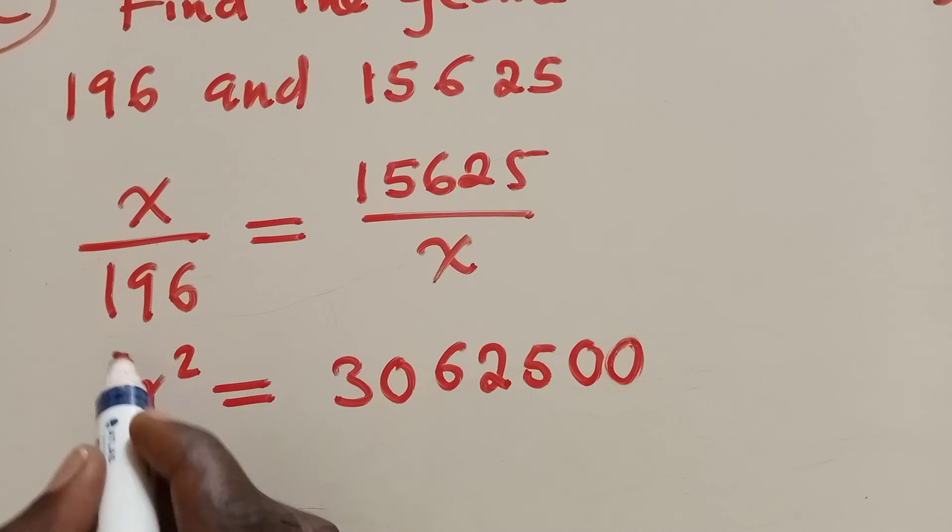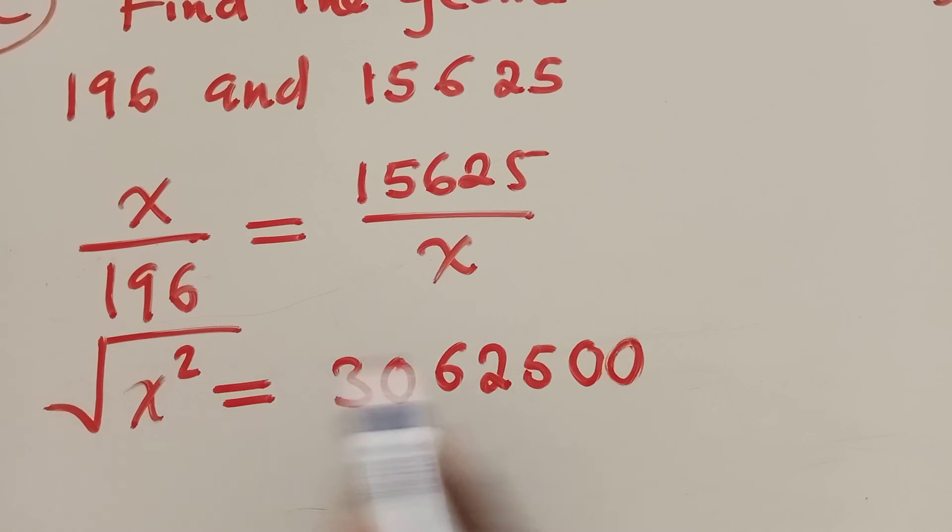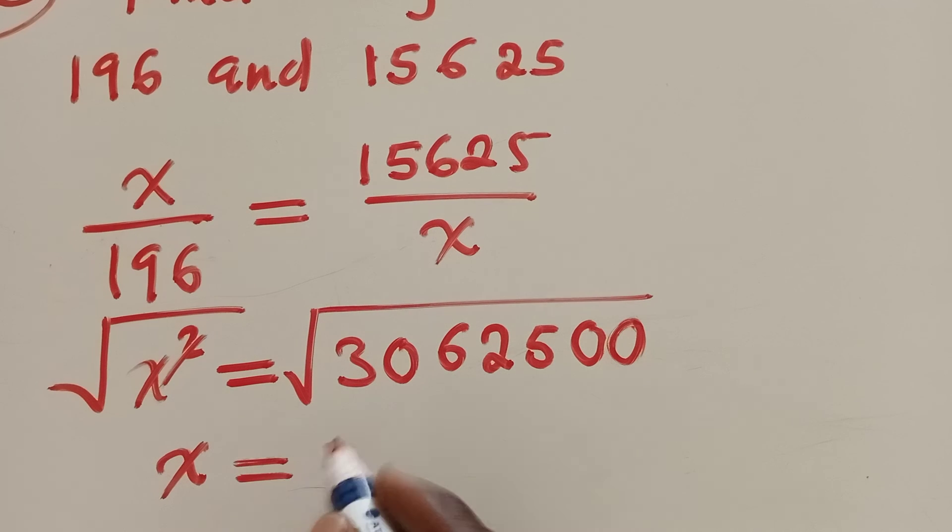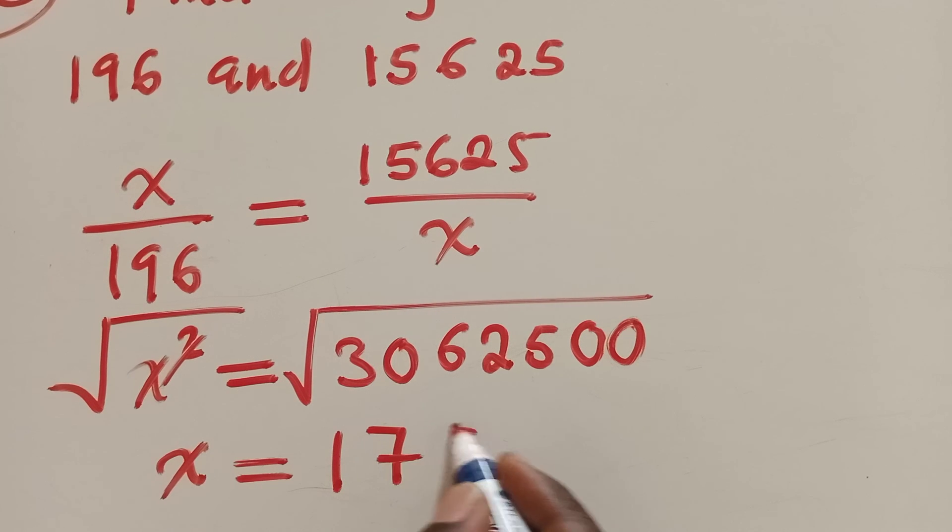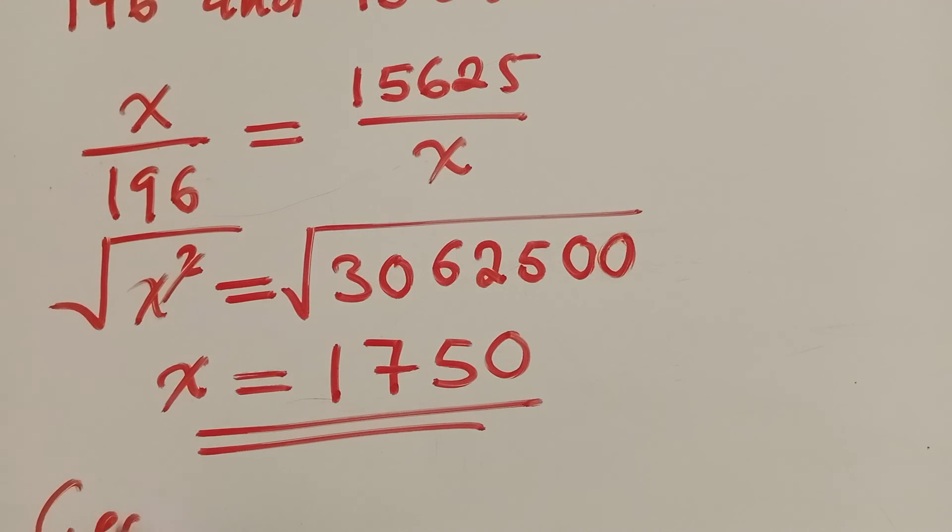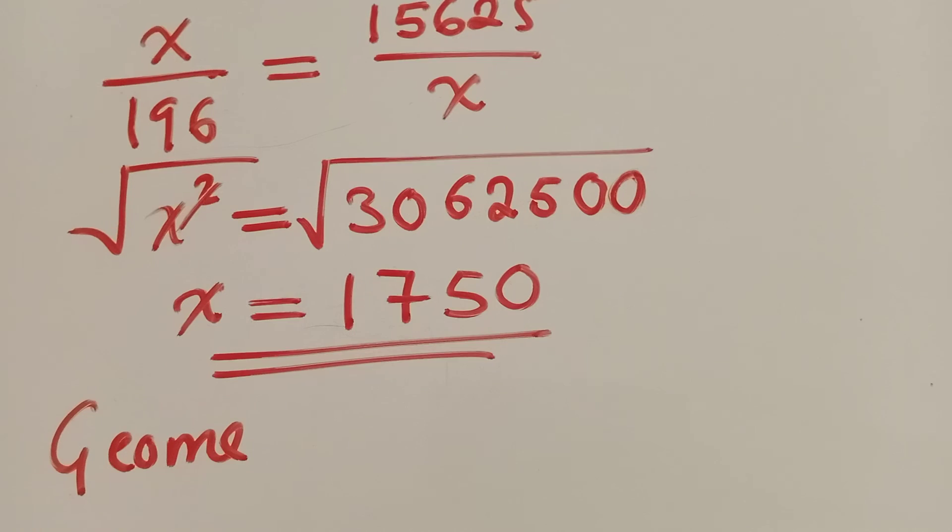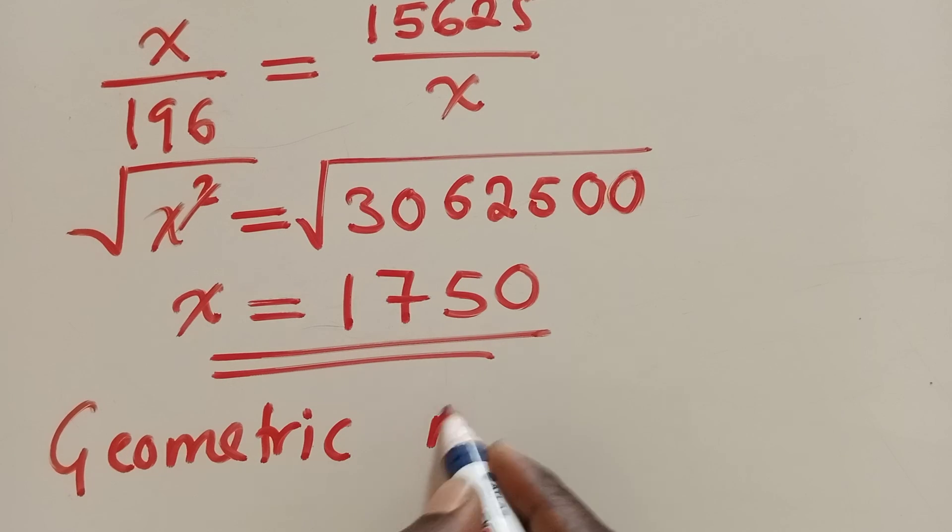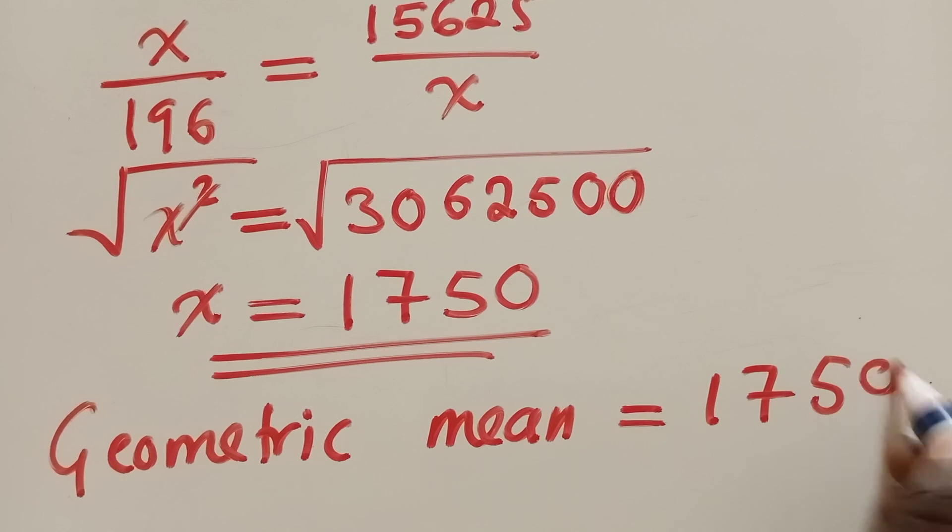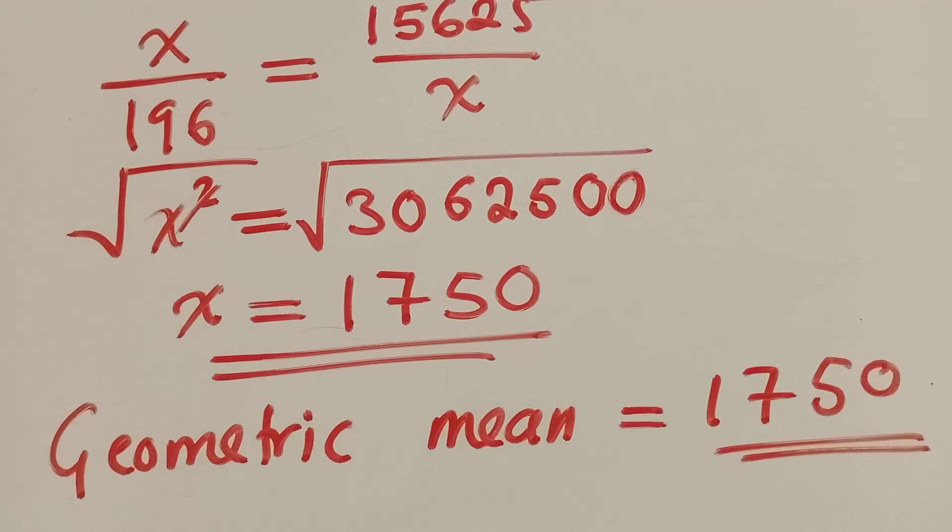So now, here at this point, we need to find, or to get rid of this power 2, so you square root both sides. So x, this power will go because of this square root. So x will be equal to 1750. So this is the geometric mean. You can even say geometric mean is equal to 1750. This is our answer.